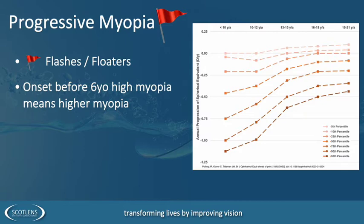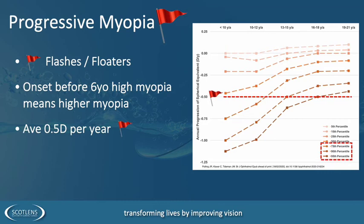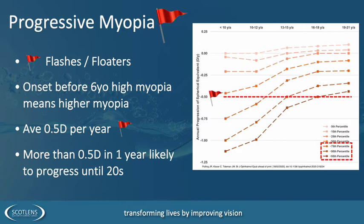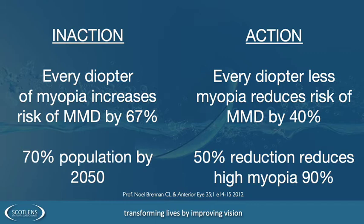If onset of myopia occurs before six years of age, that patient is likely to become a high myope. The other important figure is half a dioptre of myopia progression per year. From the graph, half a dioptre per year puts us at the 75th percentile — these patients are likely to see change every year until their 20s. If we do nothing, every additional dioptre puts more patients at risk of myopic macular degeneration, and by 2050 we'll have a large population of myopes.